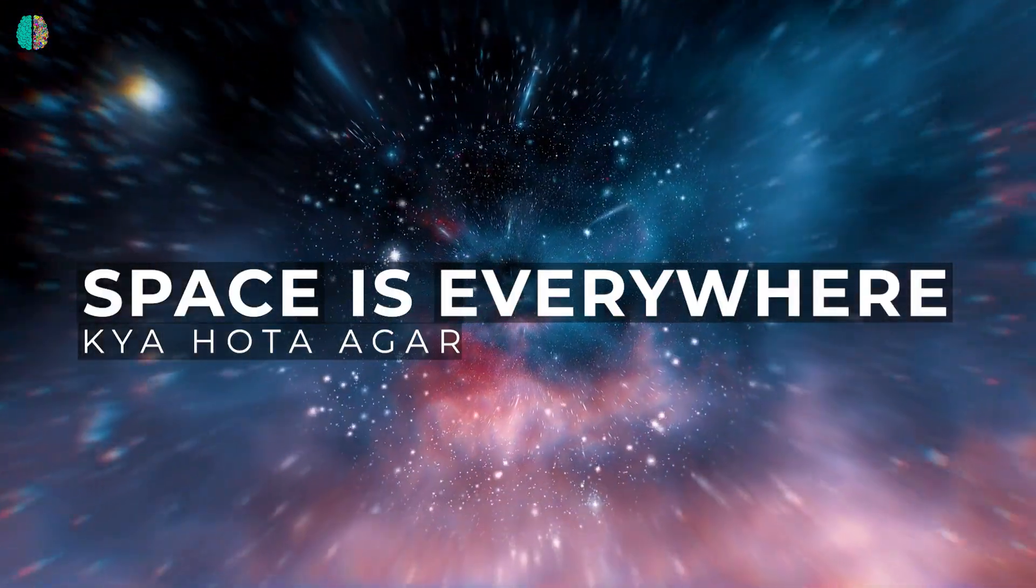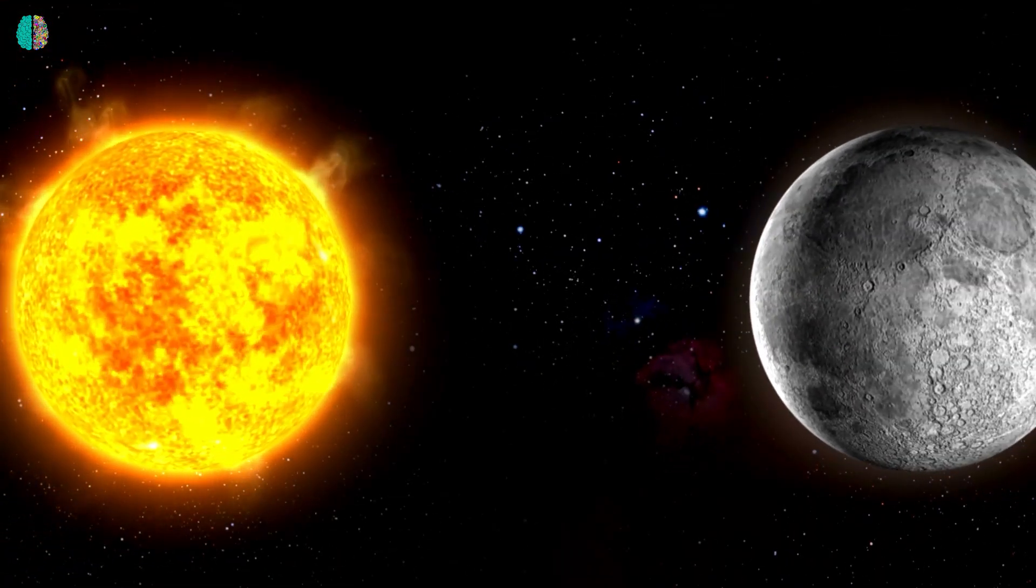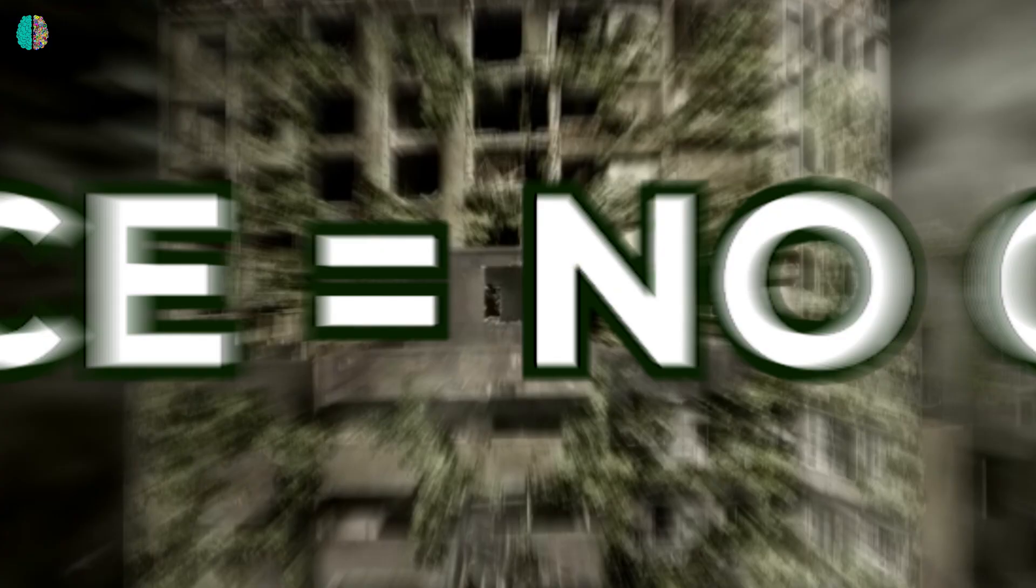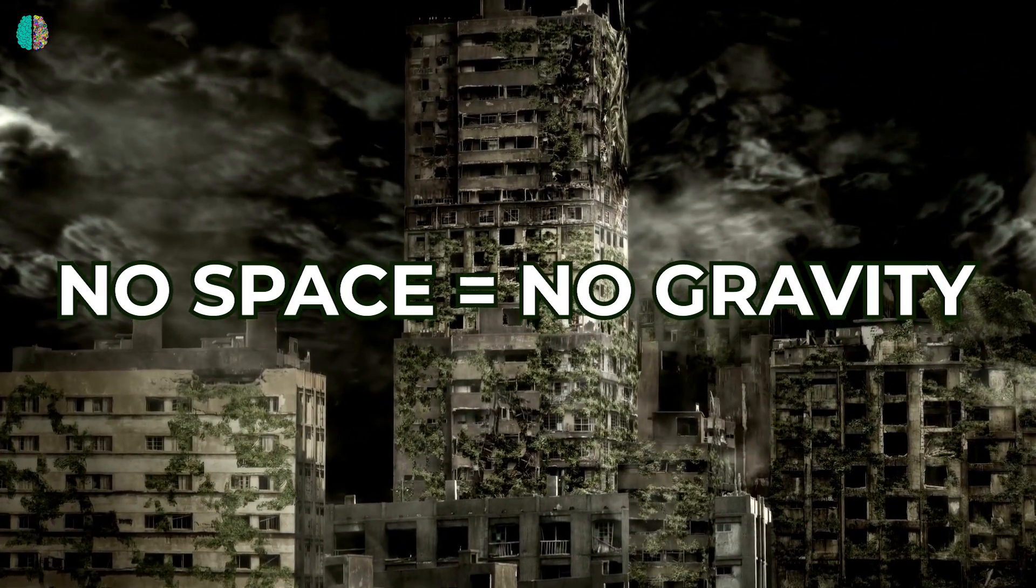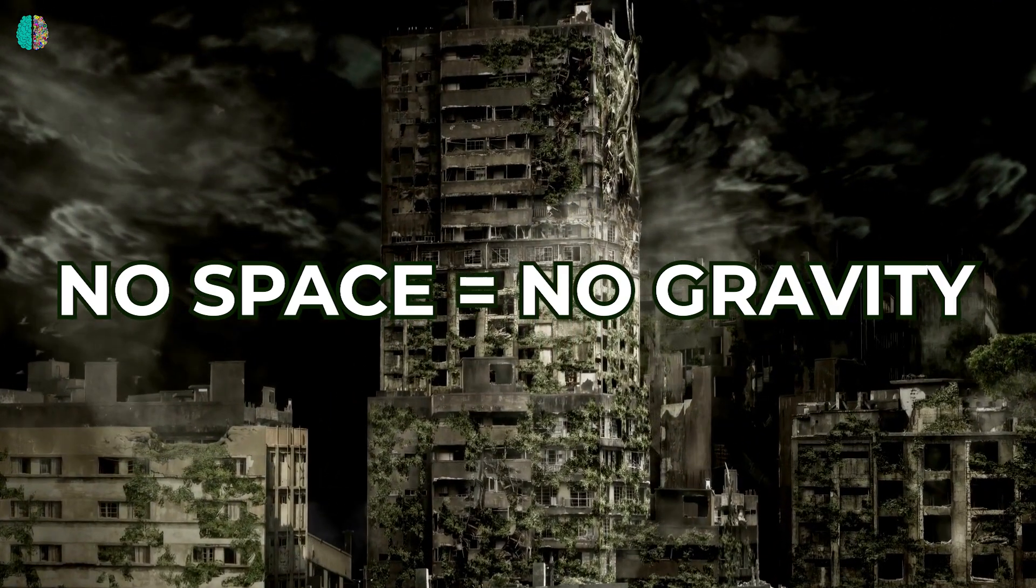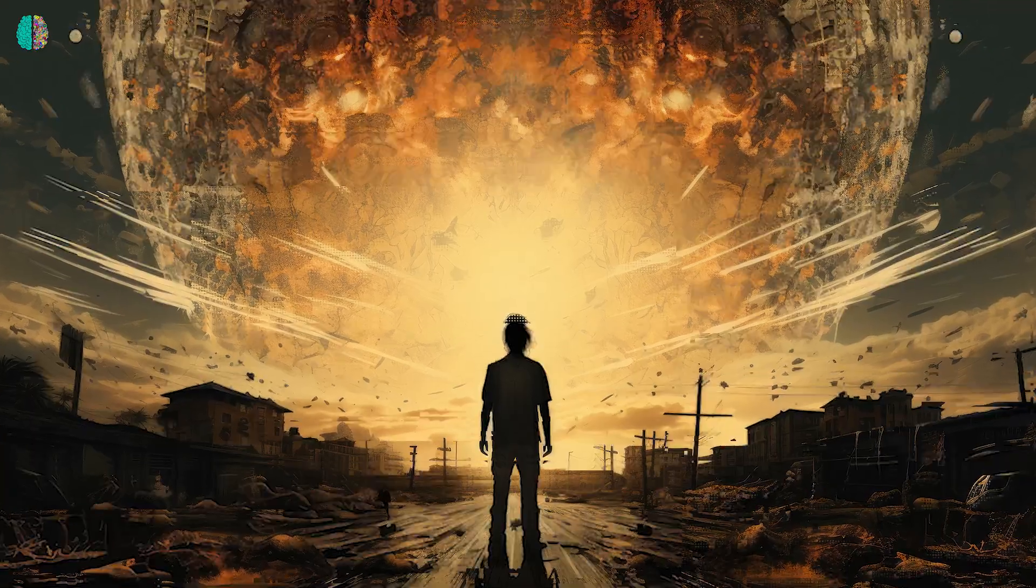पर क्या होता अगर Space नाम की कोई चीज़ ही नहीं होती? तो Universe two dimensional होता और सारी planets आपस में collide कर रहे होते क्योंकि Space नहीं मतलब gravity नहीं और अगर gravity नहीं तो ये collision आपस में चलता रहता और तब तक चलता जब तक सब कुछ खत्म ना हो जाता।